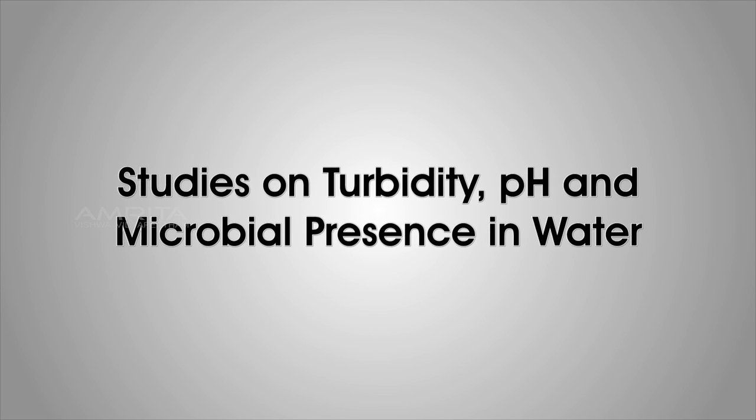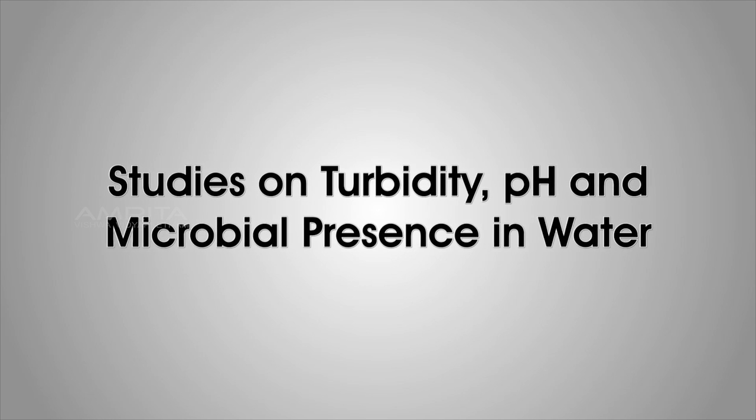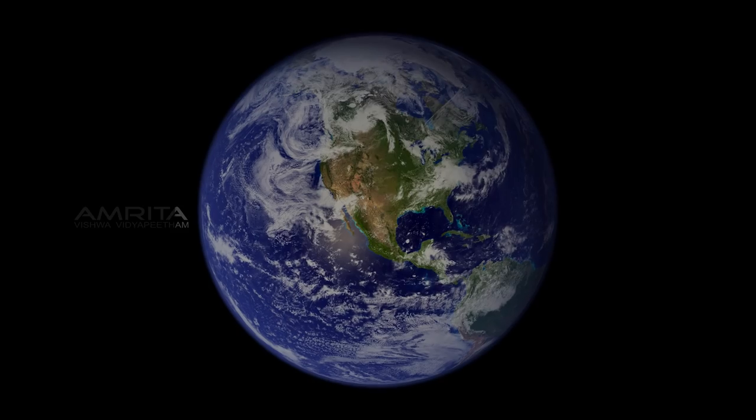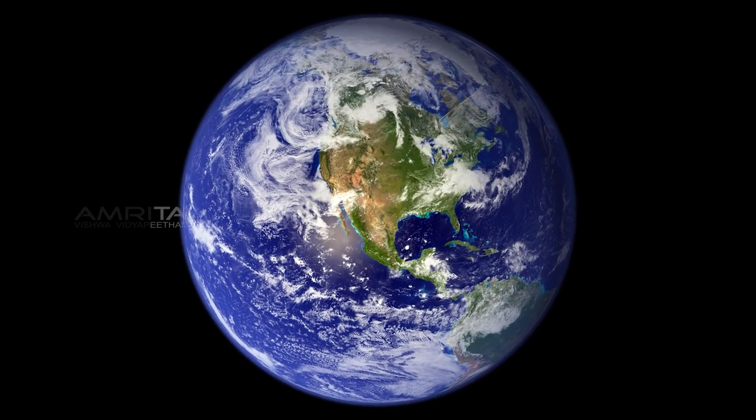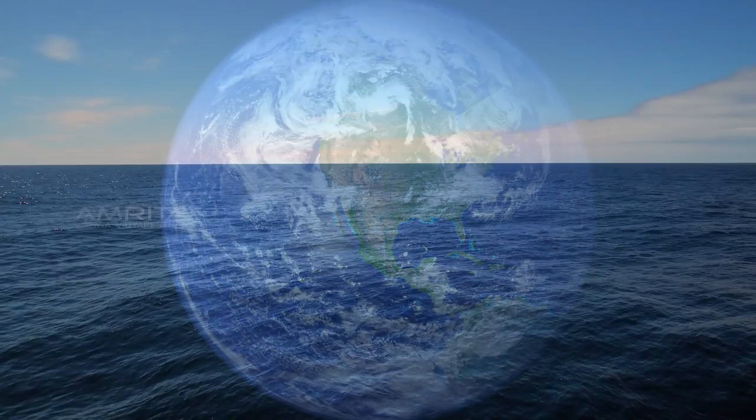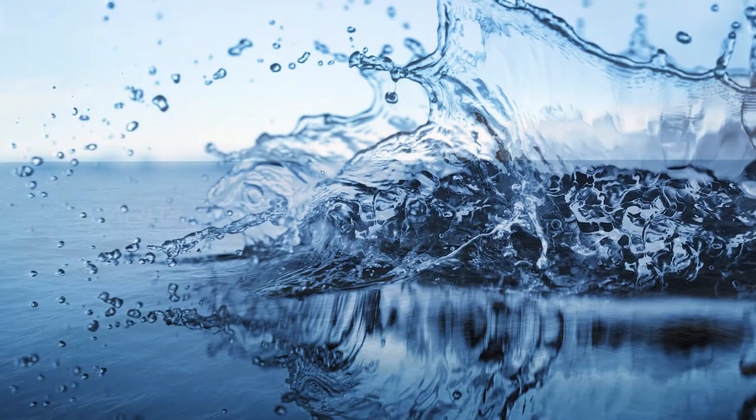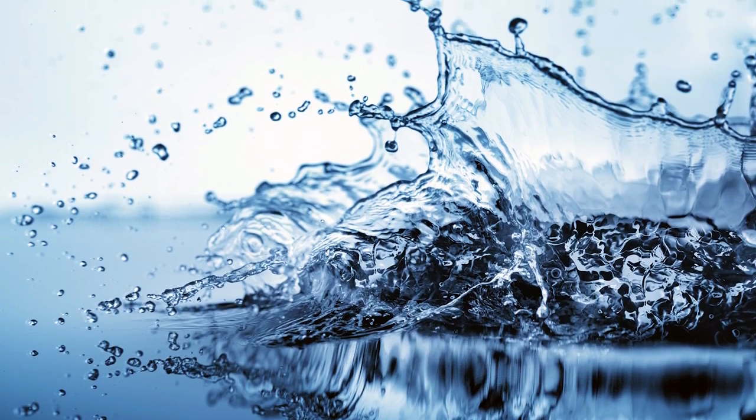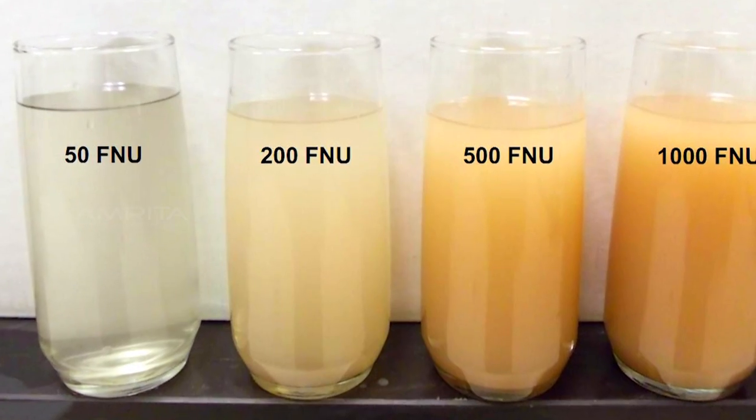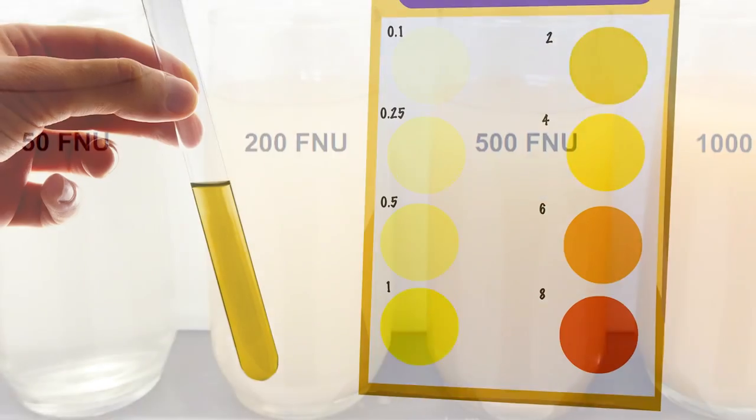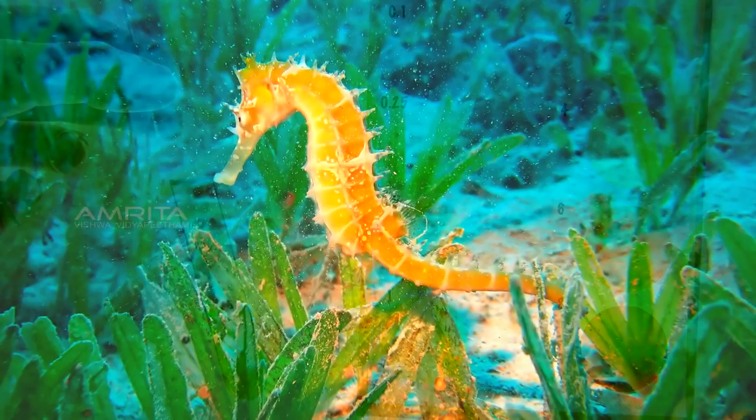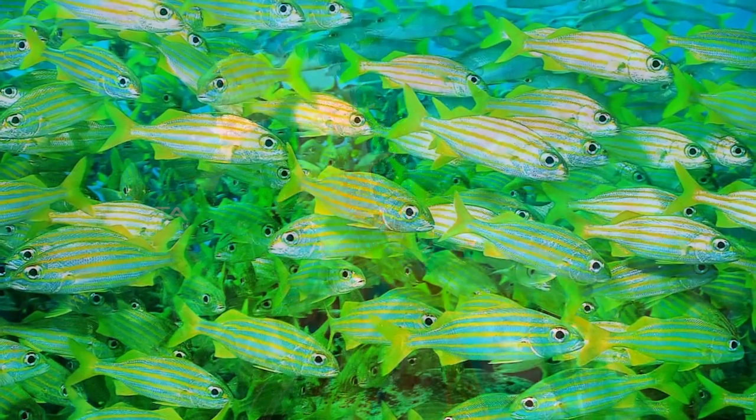Studies on Turbidity, pH and Microbial Presence in Water. Water covers about three quarters of the earth's surface and it is essential for all known forms of life. Some of the characteristics that control the quality of water are the turbidity of water, pH of the water, and different types of plants and animals and their density.